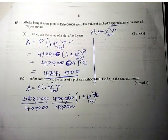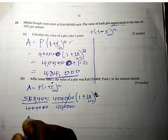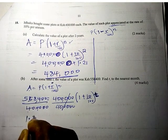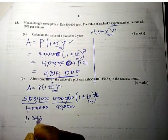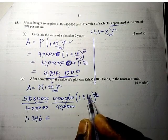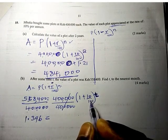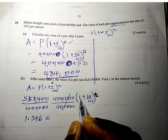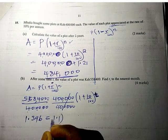This divided by this will give us 1.396 equals 1.1 raised to power T.